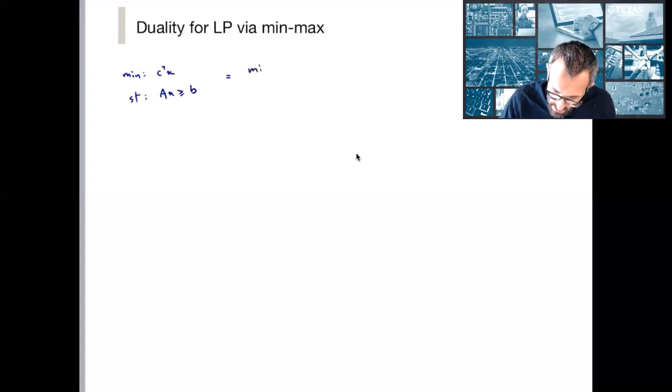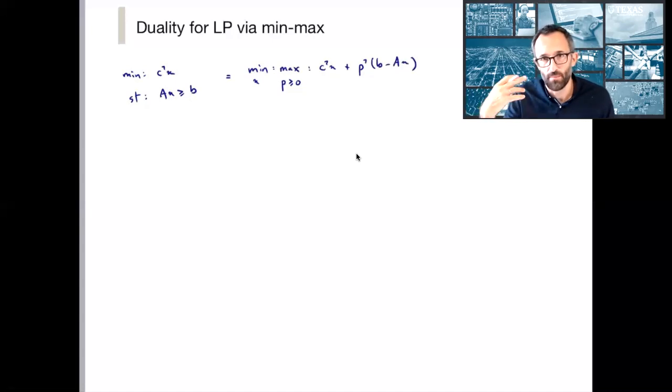But for now, let's just take this equals to mean that the value of the minimization is the same as what I'm about to write. This is the same as minimizing over x and maximizing over a variable p that's non-negative, c^T x + p^T (b - Ax). Now the convention here is that the inner optimizer gets to go second. So the maximization over p is more powerful. That maximizer gets to see what the minimizer did.